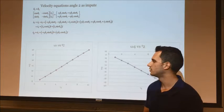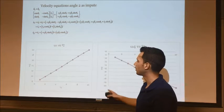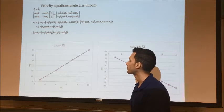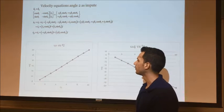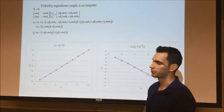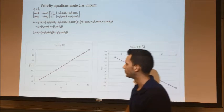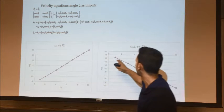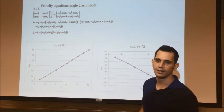For the velocity analysis, these two graphs show omega 3 versus the input angle and omega 4 versus the input angle. As you can see, the speed of omega 3 rises and the speed of omega 4 falls.